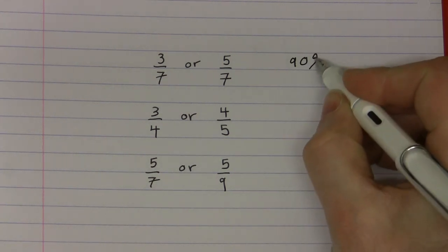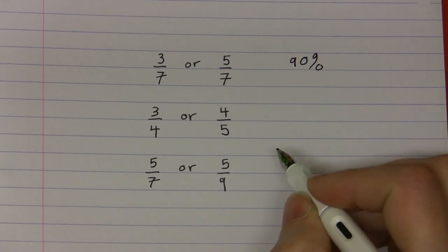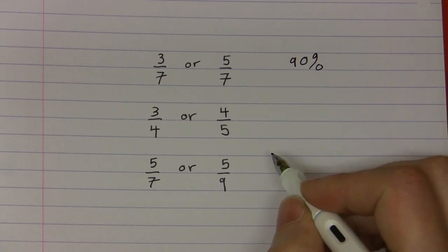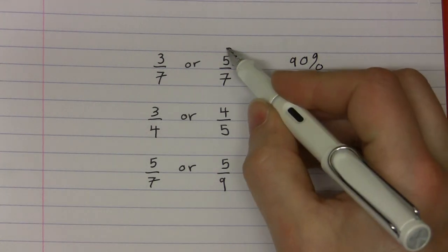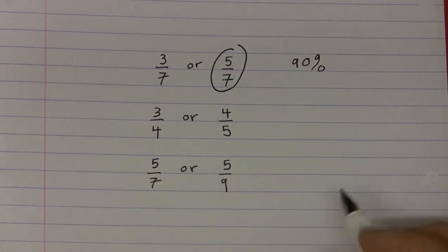Ninety percent of the students were able to correctly determine the larger fraction in the first pair and to state that 5 sevenths is greater than 3 sevenths.